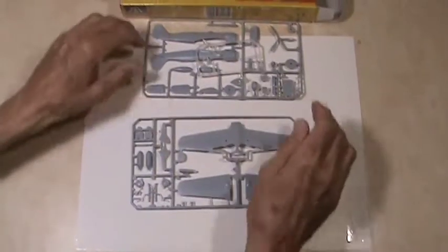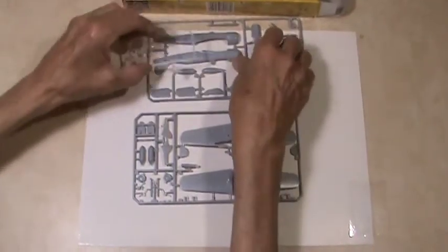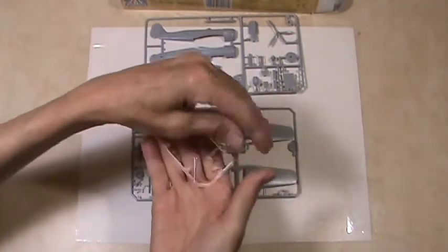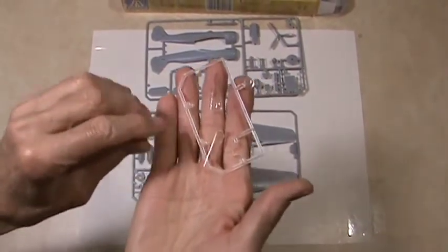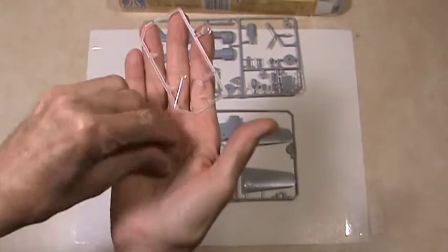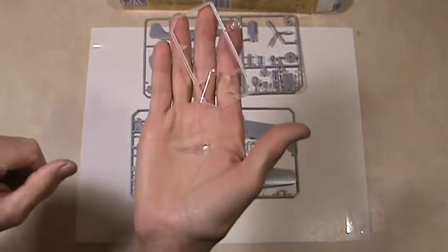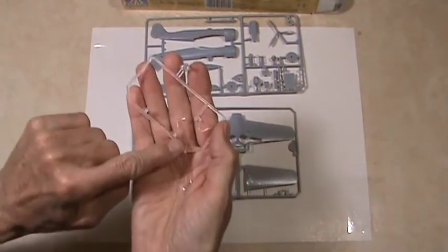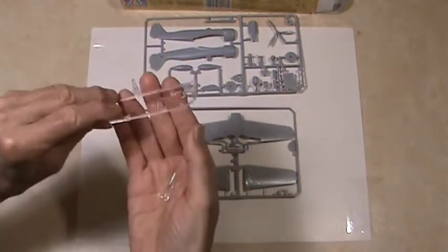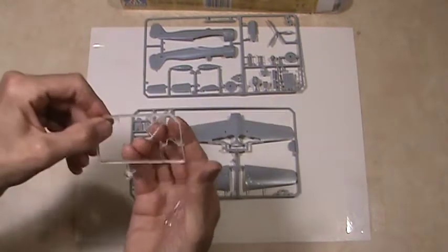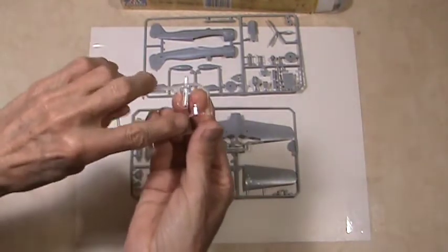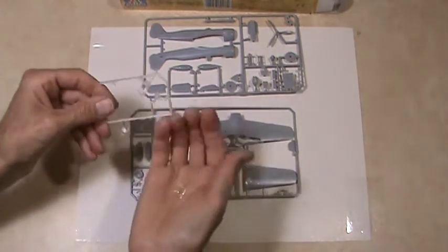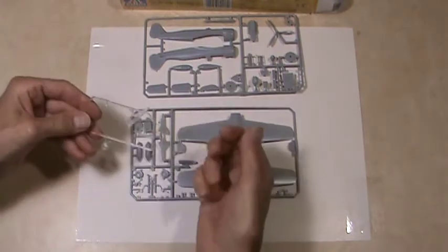All right, now we'll get to the sprues. First off, let's do the canopy because these are really hard to show. No matter what you do, they're hard to show. But there's one of them. This is the one with the hump. Here's the other one that's got the straight line. And this is the front piece. There's the front piece of the canopy right there. Goes on the forward part. That's all there is to the clear parts.